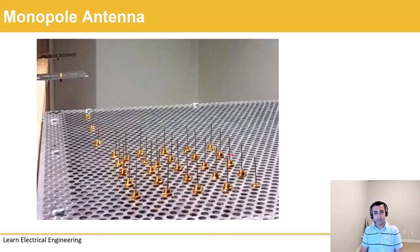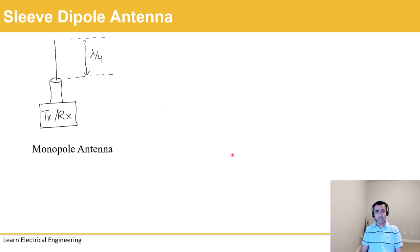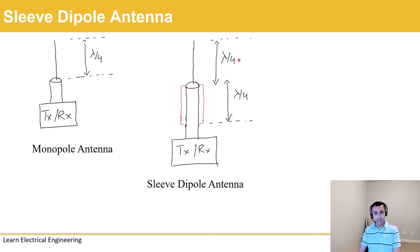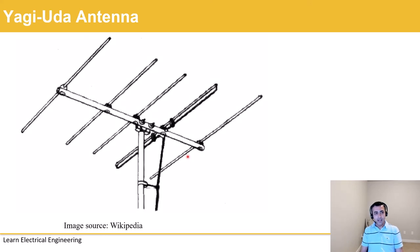Another common antenna is the sleeve dipole antenna, which most of you have probably seen at some point. Compared to a monopole antenna, it has a metallic sleeve. The wire is similar to the monopole antenna wire, but the sleeve has a length of about a quarter wavelength also. These are generally used for ham radios and RC applications.